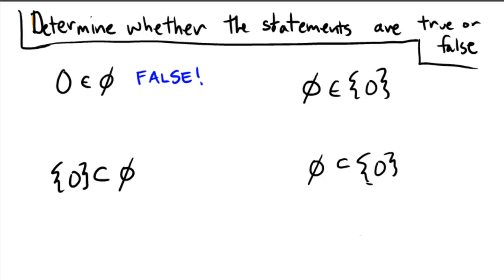In the top right, we have: the empty set is an element of the set containing zero. If we look at this set, you can see that there's something in it. The thing inside of it, though, is the number zero, not the empty set. The empty set is different from the number zero, so the empty set is not actually an element here. The only thing inside of the set is the number zero, so this statement is false.